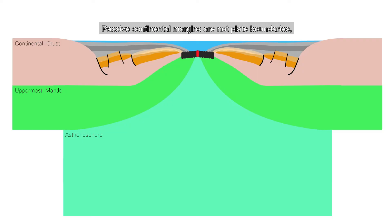Passive continental margins are not plate boundaries, but are the two separated halves of where the new plate boundary began to form as a continental rift.